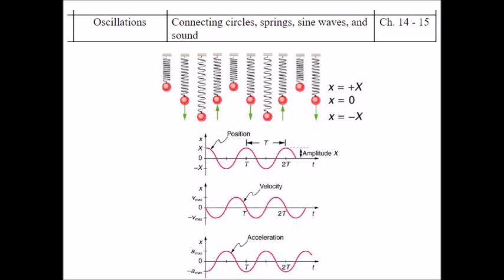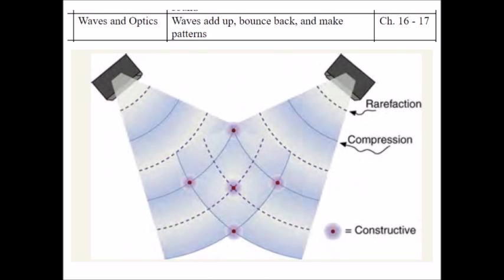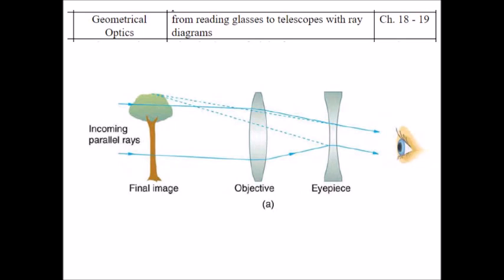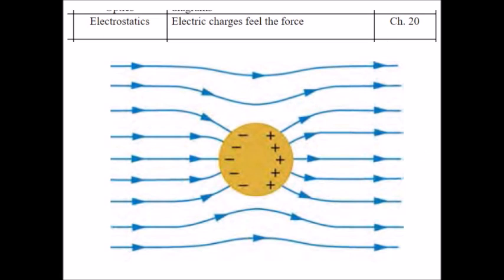We're going to have eight different units starting with the first one on oscillations in which we will connect circles, springs, sine waves, and sound. The next unit will be on waves and optics. Waves add up, bounce back, and combine together to make patterns. Then we will connect telescopes and microscopes and binoculars and eyeglasses with ray diagrams and refraction. Finally, we will have electric charges, field forces, and then take those first four units and combine them together and have a midterm exam.